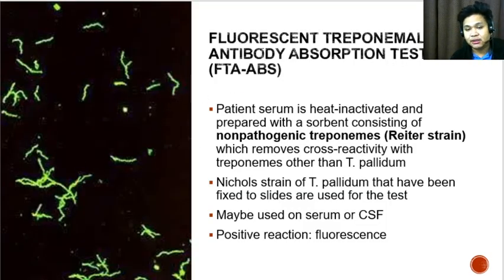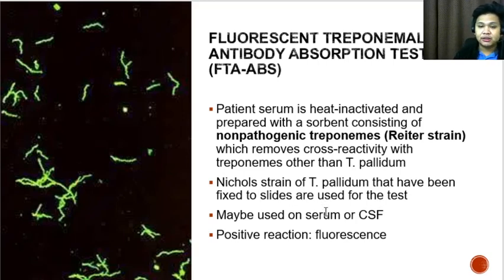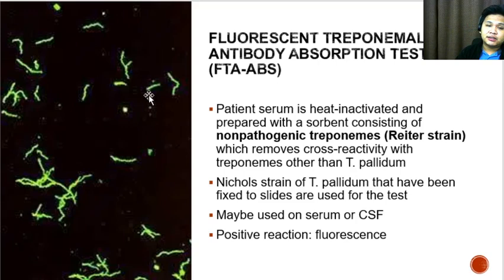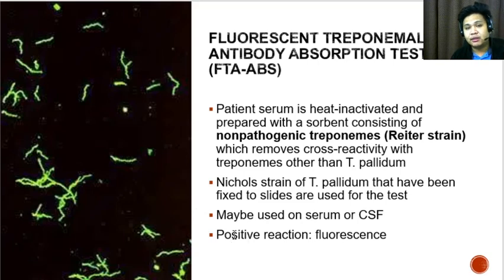Another treponemal test is the FTA-ABS, or Fluorescent Treponemal Antibody Absorption Test. The patient serum is heat-inactivated and prepared with a sorbent of non-pathogenic treponemes (Reiter strain) to remove cross-reactivity with treponemes other than Treponema pallidum. The Nichols strain of Treponema pallidum fixed to slides is used for the test. Patient serum is applied; if treponemal antibodies are present, they attach to the Nichols strain antigens. A secondary antibody with a fluorescent label is then applied, and the positive reaction — viewed under a fluorescent microscope — is fluorescence.